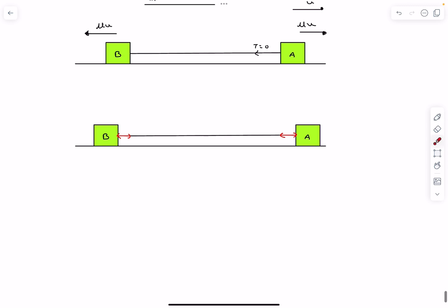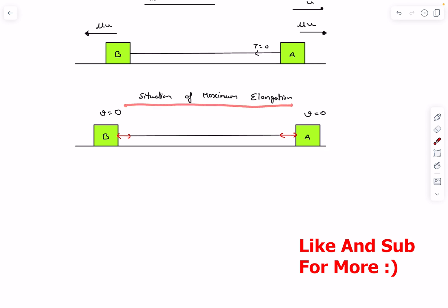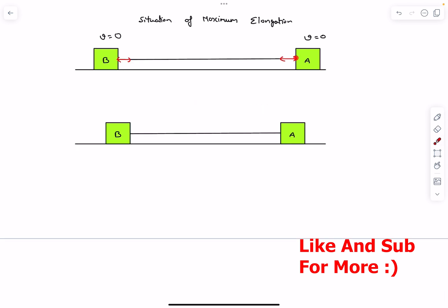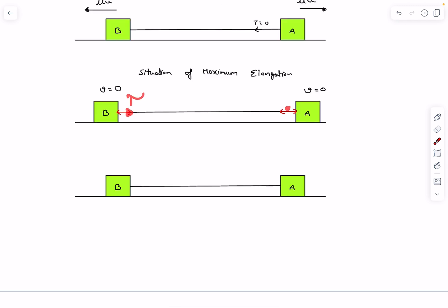Let's say this state 2 that we drew is the situation where the stretch in the string is maximum. In this case, in the cm frame, both of their velocities will come to zero. This situation is a situation of maximum elongation. After this, the tension forces are still acting on the blocks because the string is elongated, and it will keep acting till the string attains its original length. The tension on both ends are going to be the same, so the same impulse acts on block b and block a.